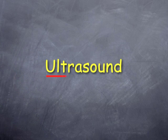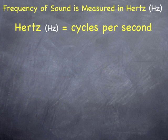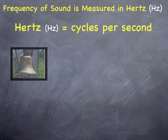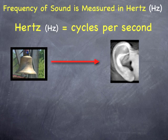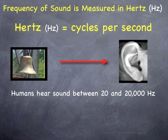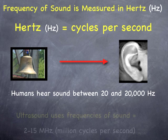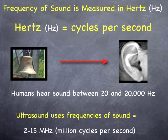Ultrasound — what does that mean exactly? The 'ultra' part refers to frequency. Normally, humans hear sounds between 20 and 20,000 hertz, or cycles per second, in day-to-day life. Ultrasound uses frequencies of 2 to 15 megahertz — million cycles per second — far above the range that we normally use in everyday hearing.